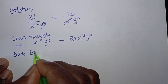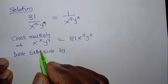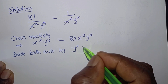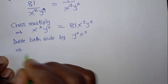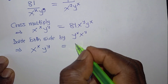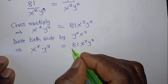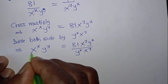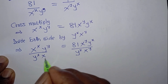Divide both sides by y to the power x and x to the power y. So this implies we have x to the power x, y to the power y equals to 81 x to the power y, y to the power x. Divide both sides by y to the power x, x to the power y. Here too, y to the power x, x to the power y.